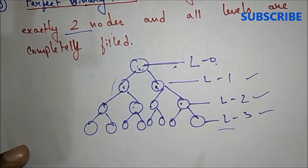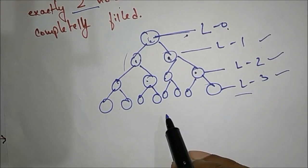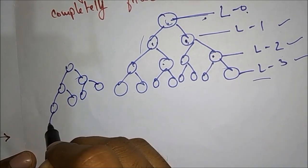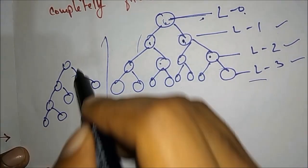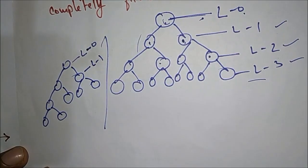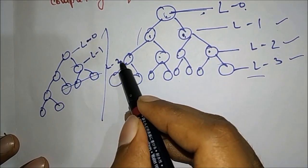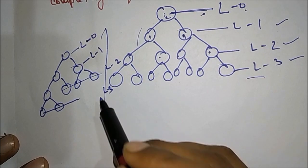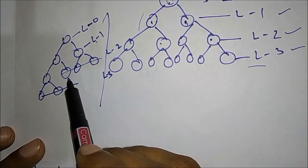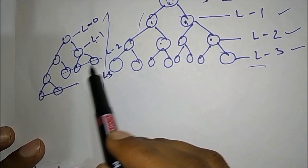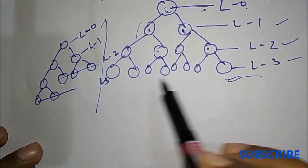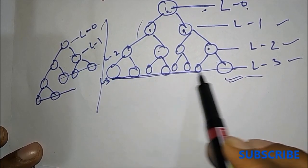An important thing is it should not be like this example — that is not a perfect binary tree. See: level 0 is okay, level 1 is okay, level 2 is also okay, but level 3 is not completely filled because these three nodes are not filled. So it is not a perfect binary tree. The important thing is all nodes should be at the same level.